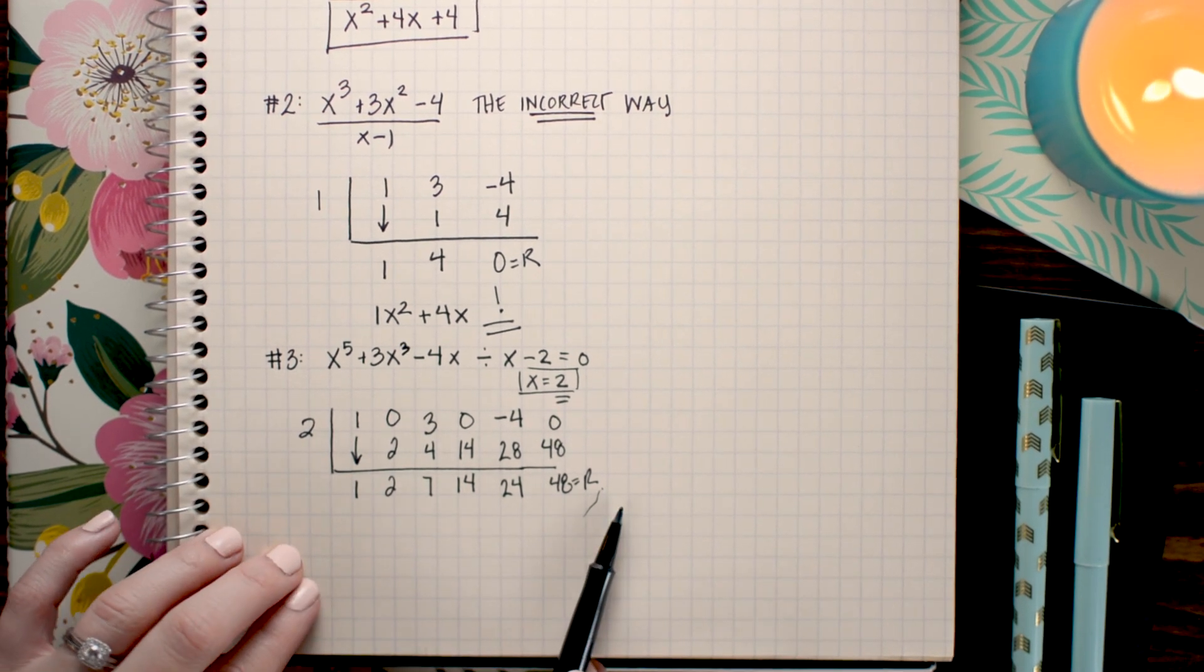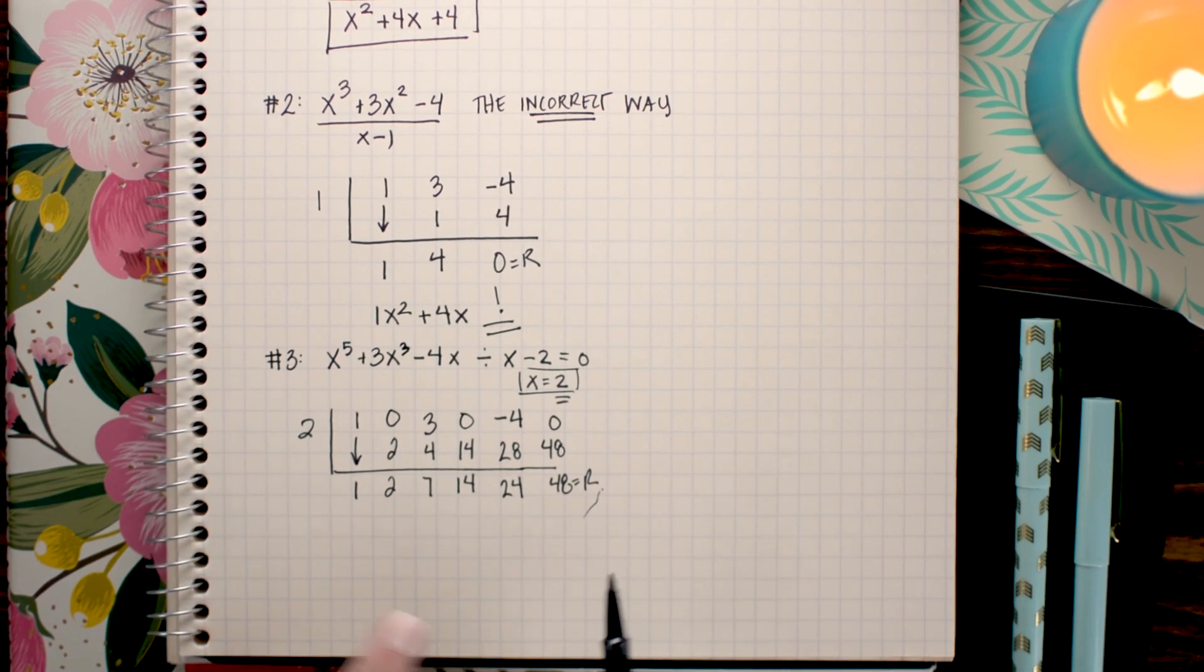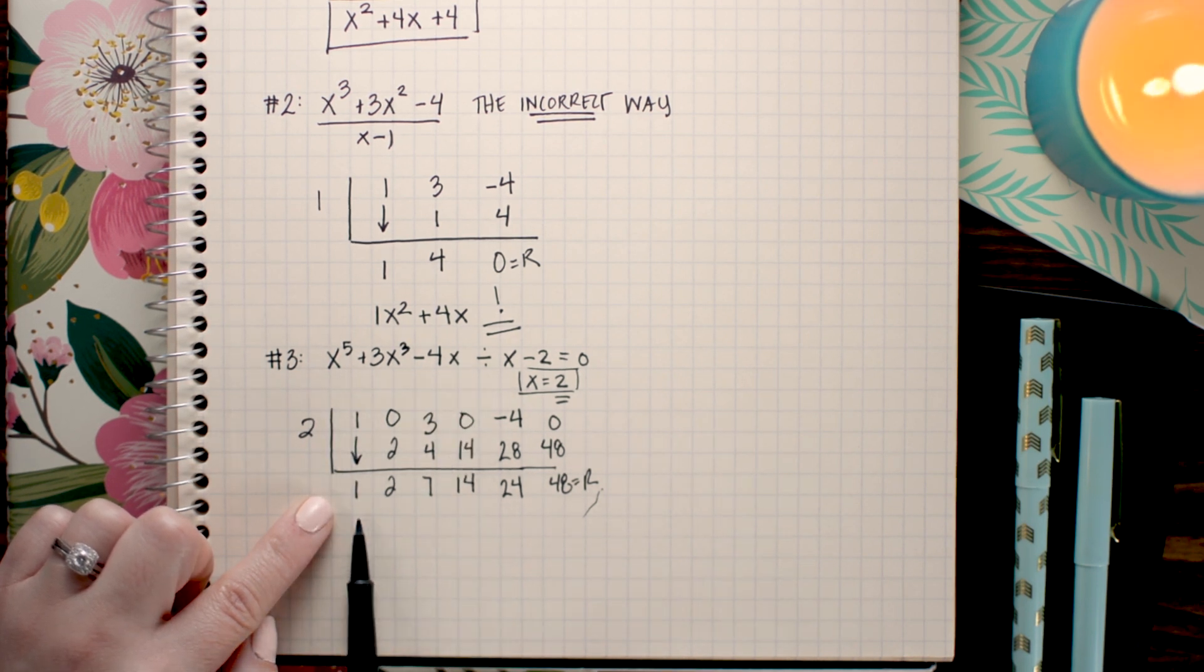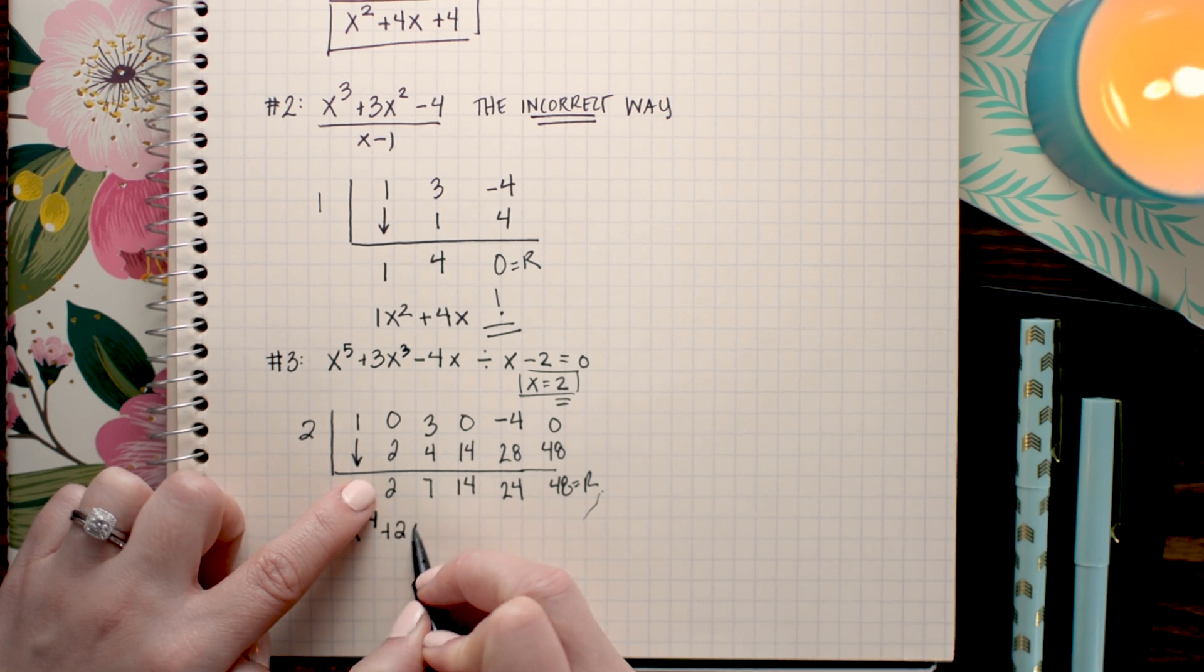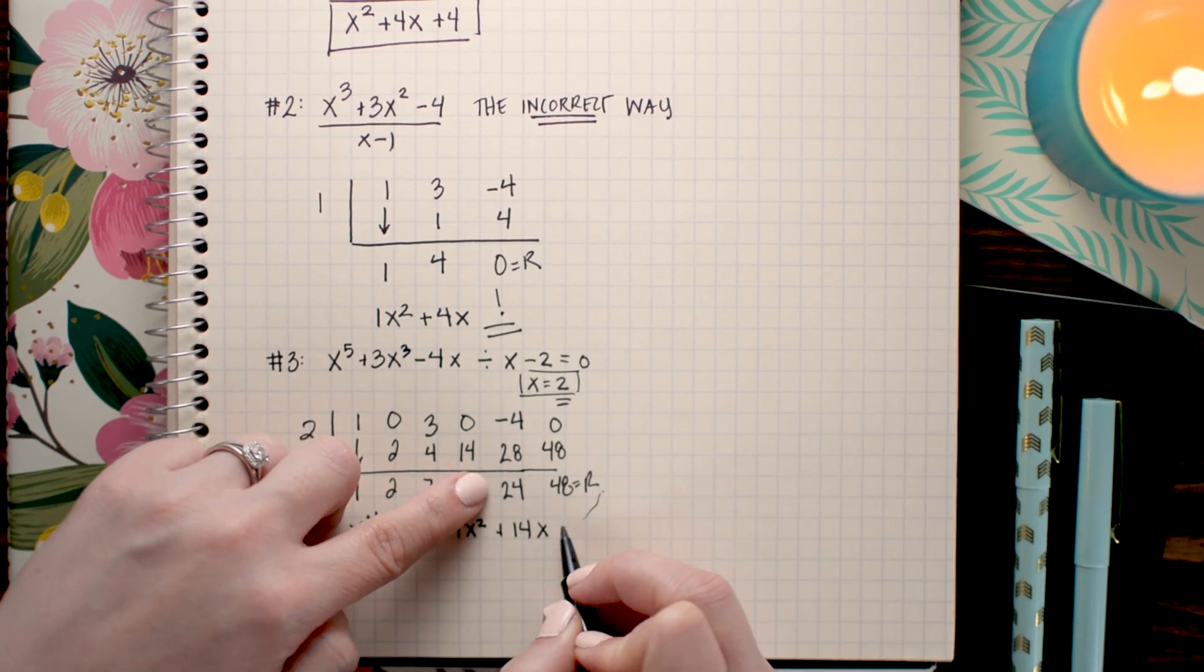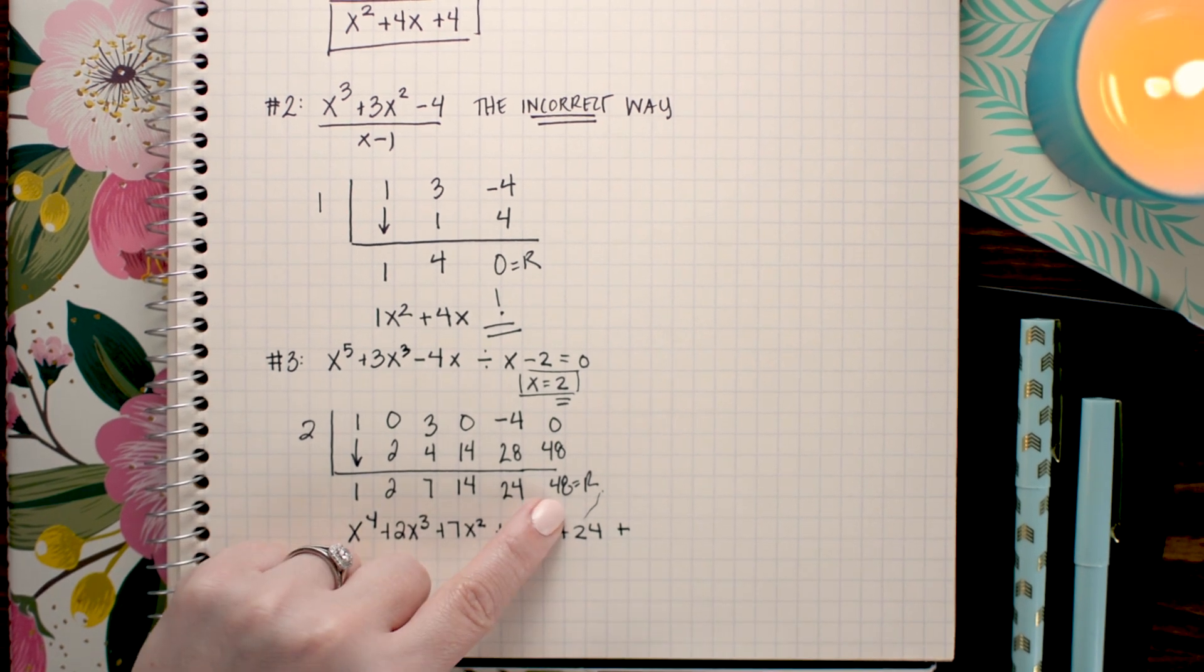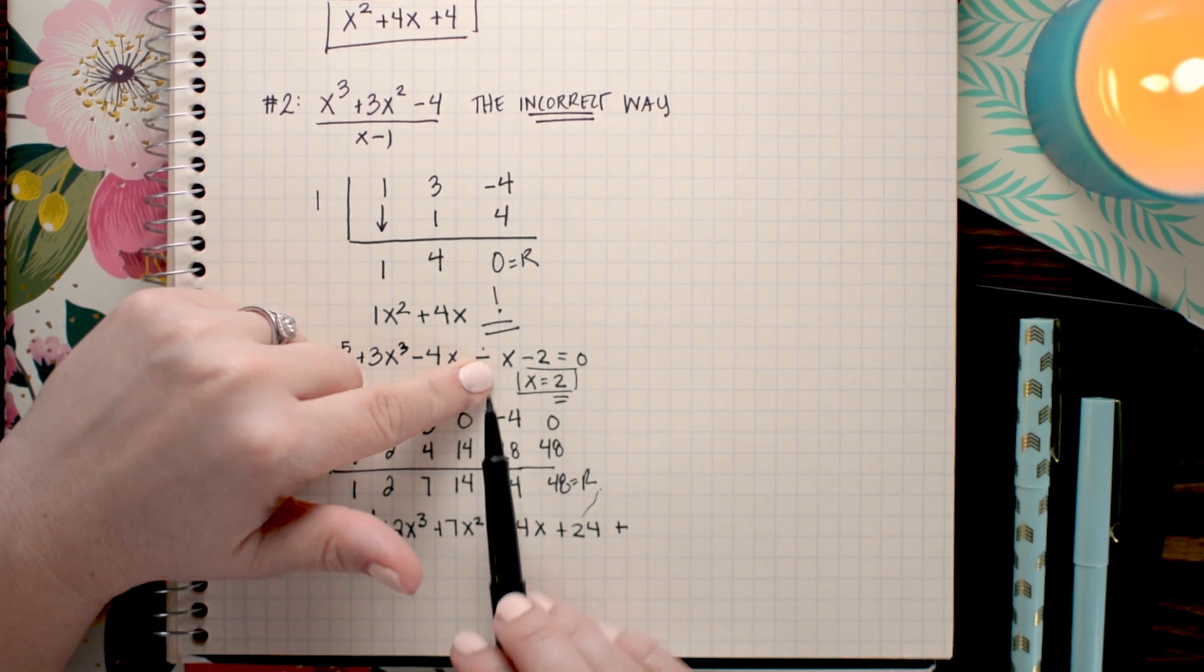So after completing my synthetic division I have a remainder this time of 48. So I'm going to show you how you write that onto your solution. But first let's go ahead and translate this back into a polynomial. So I'm going to have 1x to the fourth because I start with a fifth degree equation here. So I'm going to drop it by 1 degree. So I'll have x to the fourth plus 2x cubed plus 7x squared plus 14x plus 24. Now if you have a remainder other than zero you need to add that to the end of your polynomial. And how you add it is you write it over top of your divisor. So it's going to go over x minus 2 in this case.